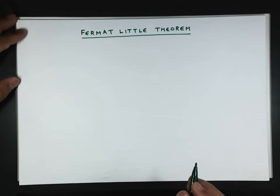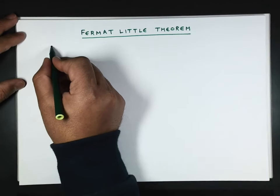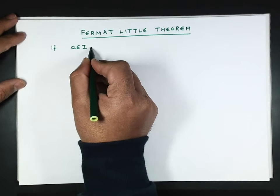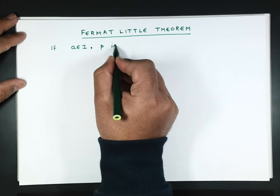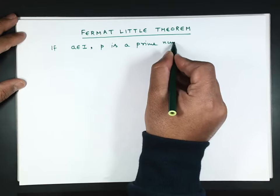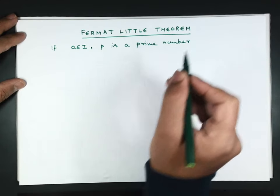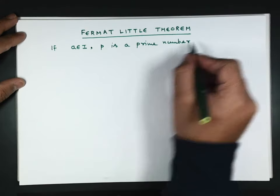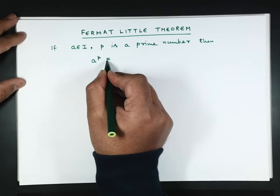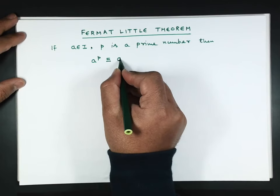Today we are going to discuss Fermat's Little Theorem and its proof. If a belongs to integers and p is a prime number, then a raised to power p is congruent to a modulo p.